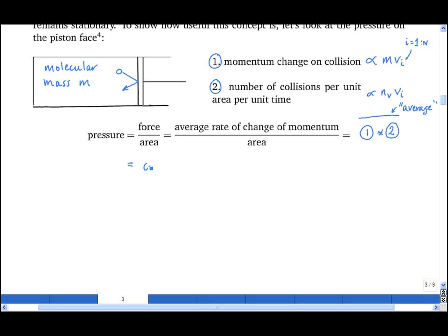That's equal to some constant, which I shall not define yet, times the number of molecules per unit volume, nv, times the molecular mass, times the speed of the molecules squared, and that's all averaged. And that's equal to, if I just rearrange it, a constant times nv, times mvi squared, averaged.